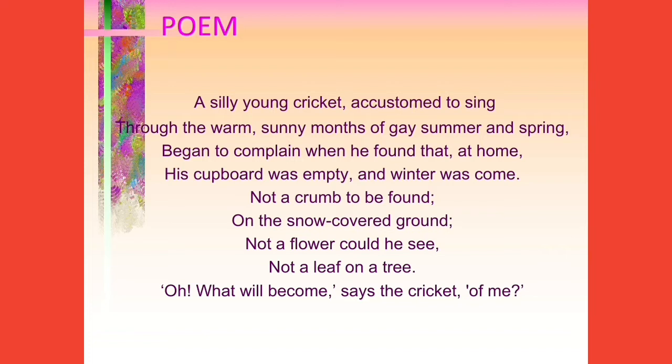Let me explain the first stanza. There was a foolish young cricket and it used to sing all the time during the warm sunny months of happy summer and spring. When winter season came, it started to complain because its cupboard was empty and it couldn't find even a broken piece of food on the ground. The ground was completely covered with snow. Not a flower could he see and not a leaf on the tree, and he was complaining to himself saying, oh, what will become of me?